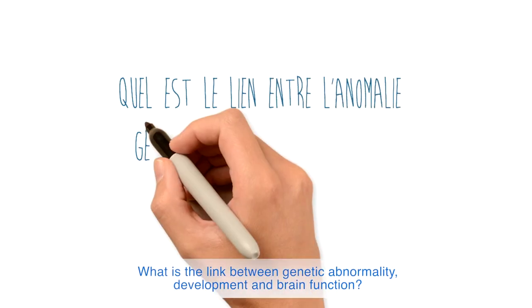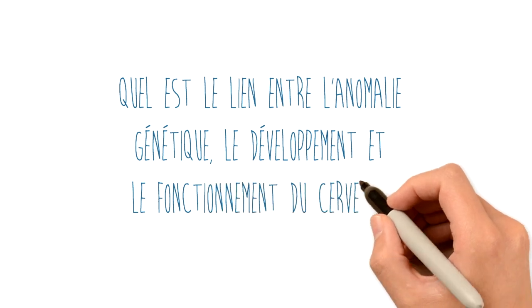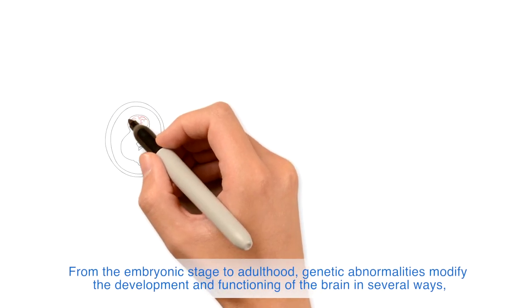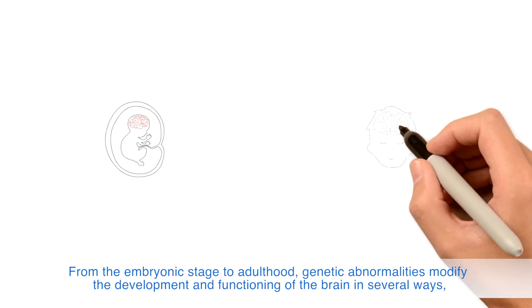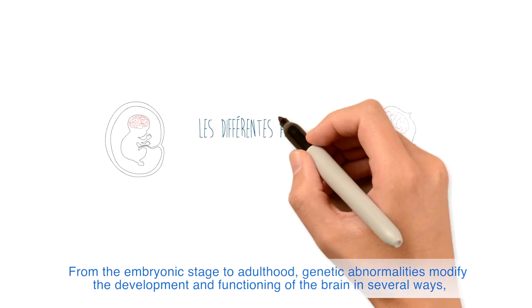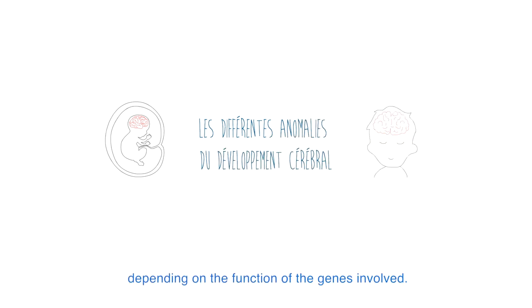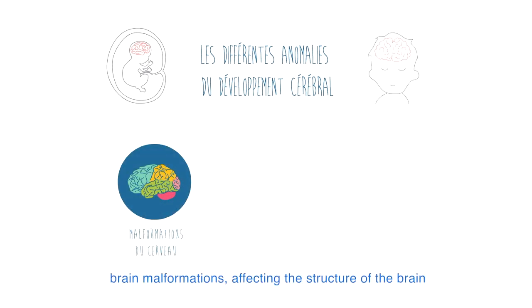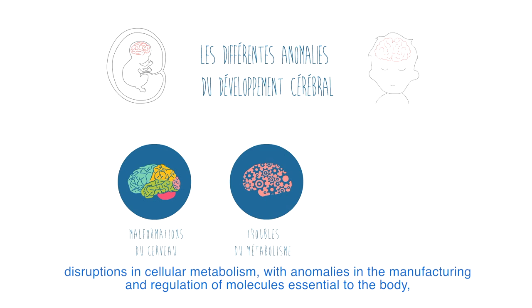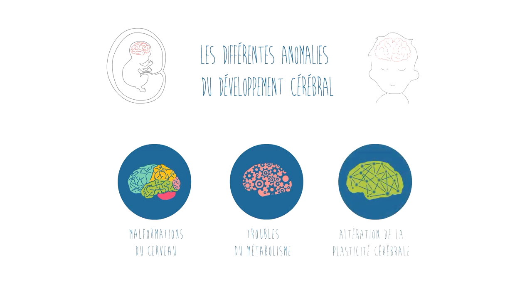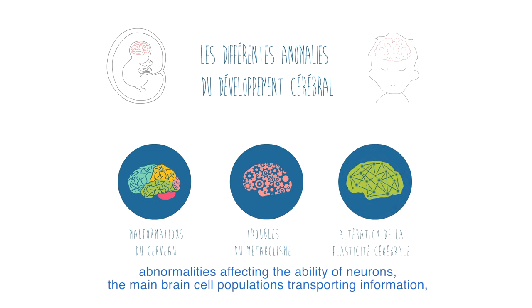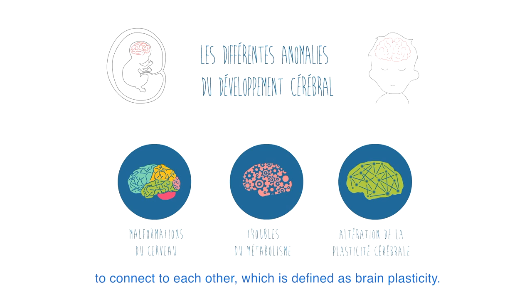What is the link between genetic abnormality, development, and brain function? From the embryonic stage to adulthood, genetic abnormalities modify the development and functioning of the brain in several ways, depending on the function of the genes involved. They cause three main types of disturbances: brain malformations affecting the structure of the brain; disruptions in cellular metabolism with anomalies in the manufacturing and regulation of molecules essential to the body; and abnormalities affecting the ability of neurons — the main brain cell populations transporting information — to connect to each other, which is defined as brain plasticity.